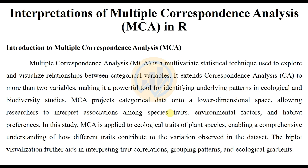MCA is a powerful tool for identifying underlying patterns in ecological and biodiversity studies. It projects categorical data onto a lower-dimensional space, allowing researchers to interpret associations among species traits, environmental factors, and habitat preferences. In this study, MCA is applied to ecological traits of plant species, enabling a comparative understanding of how different traits contribute to the variations observed in the dataset. The biplot visualization further aids in interpreting trait correlations, grouping patterns, and ecological gradients.